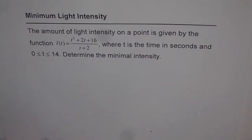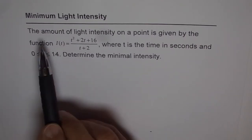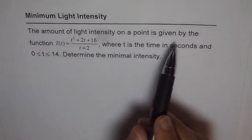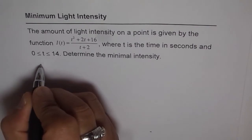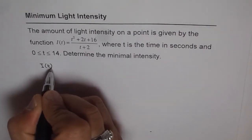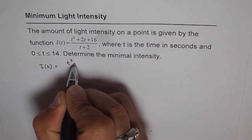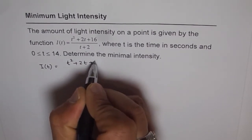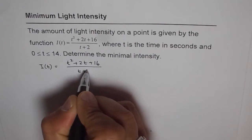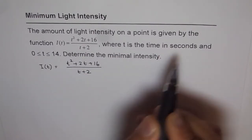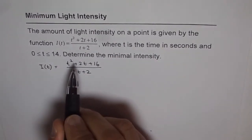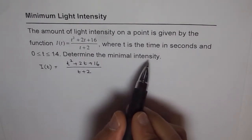Now coming back to the question. It says the amount of light intensity on a point is given by this function. So let's write down the function here. So intensity is a function of time they say and it is equals to t² + 2t + 16 over t + 2.